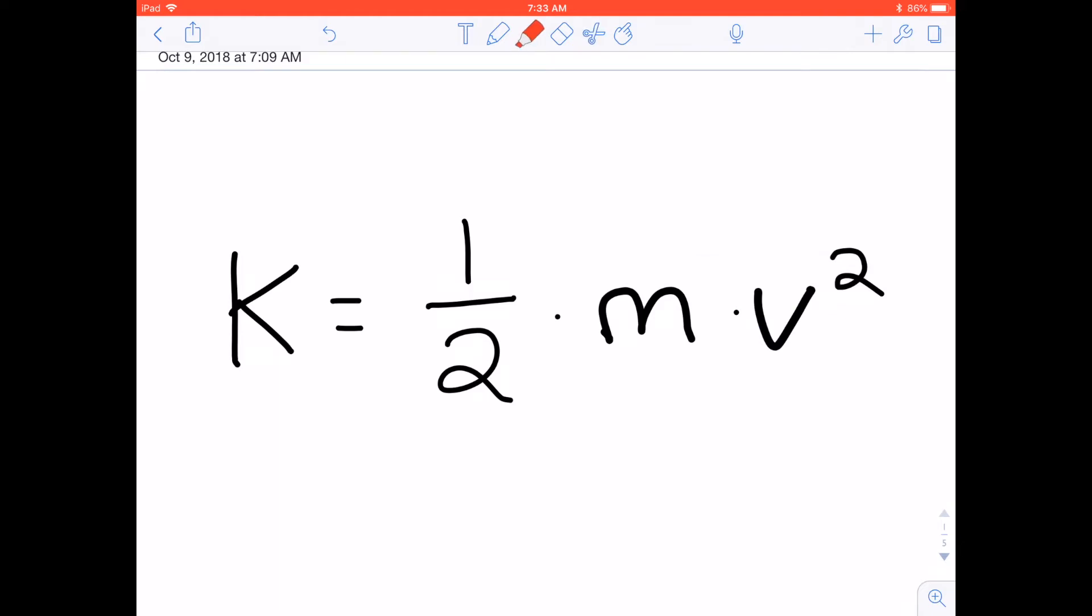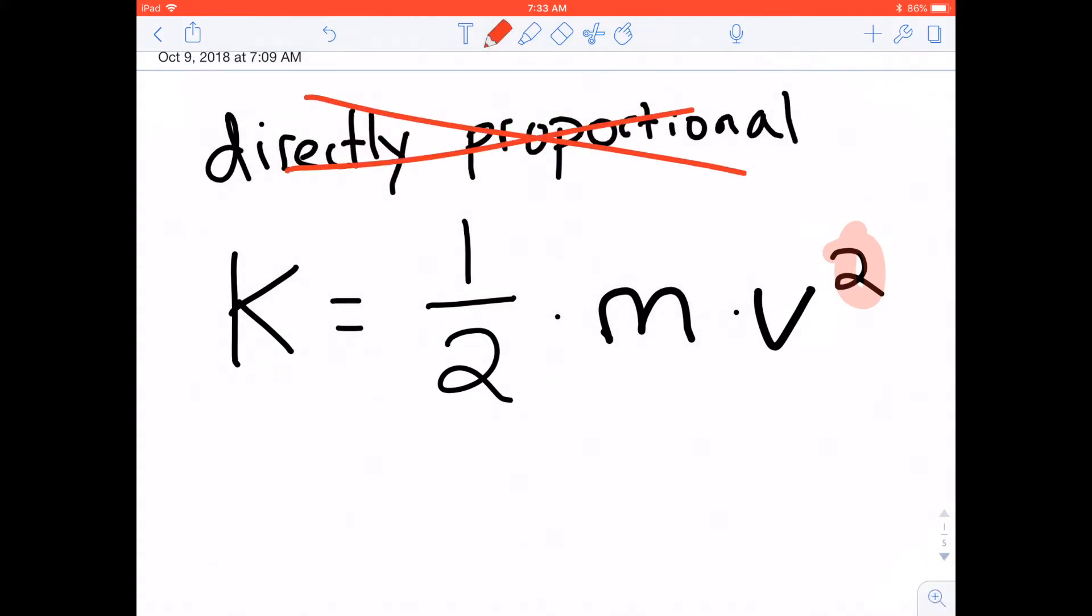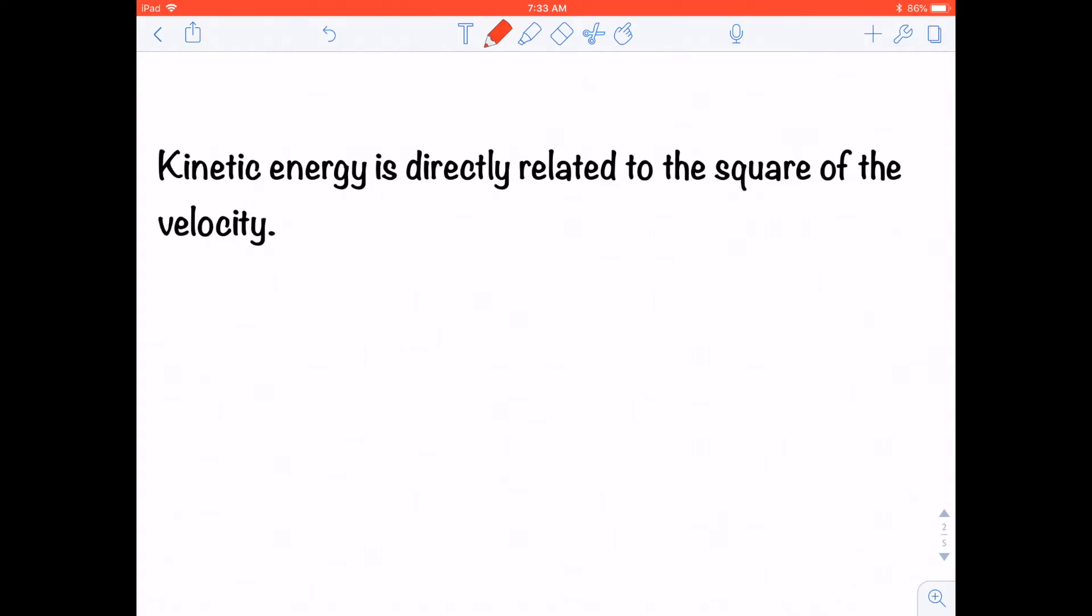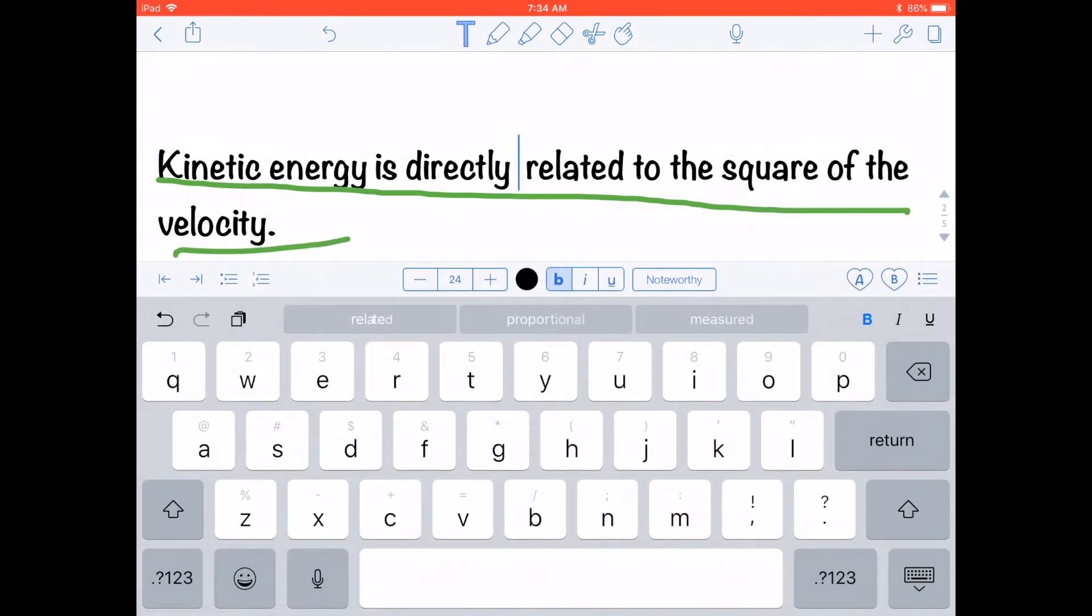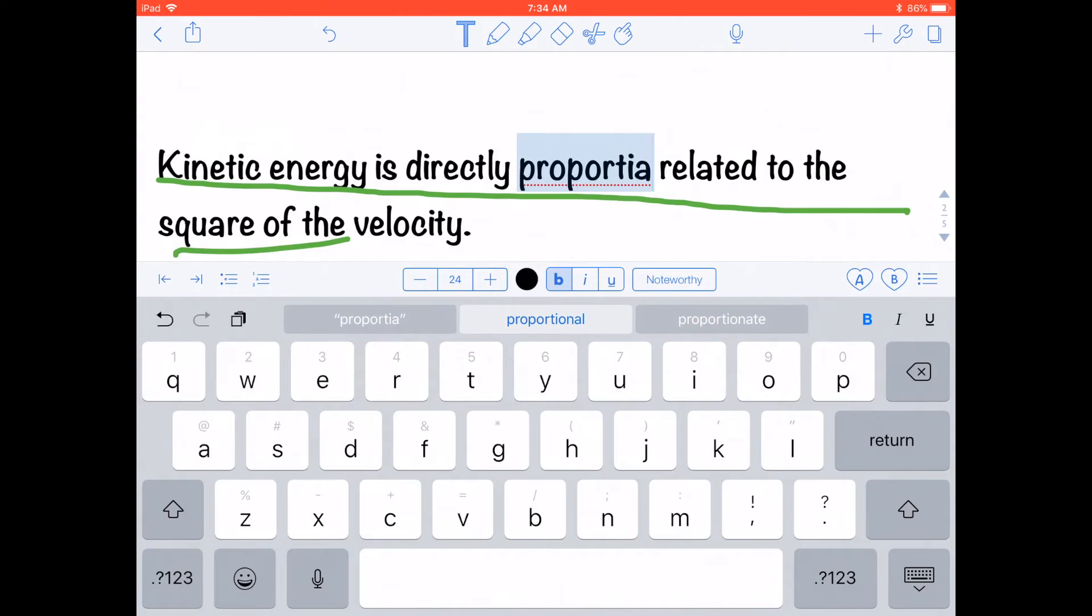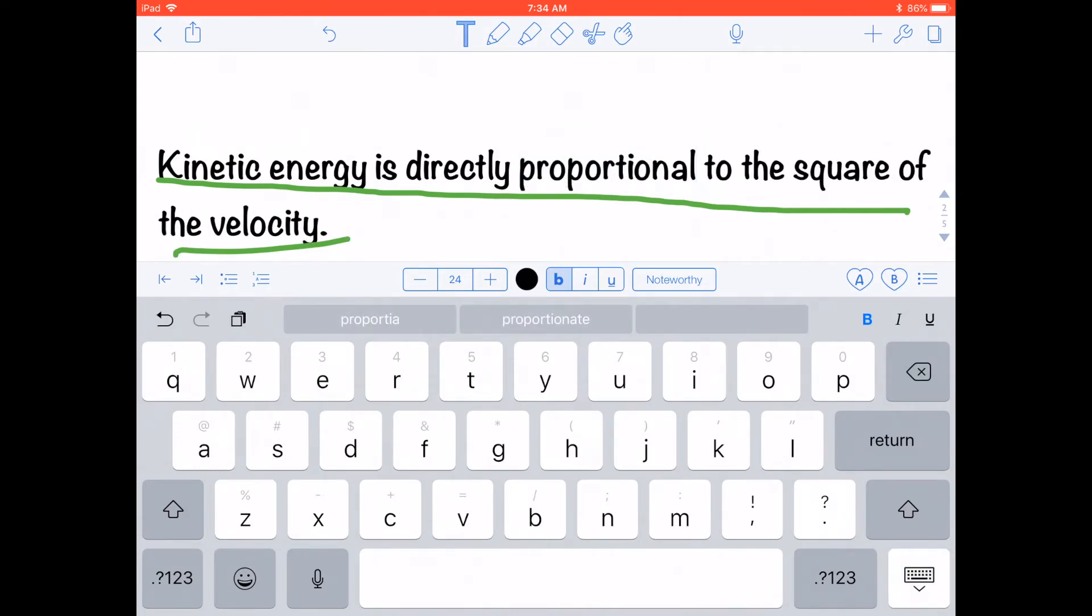However, this square makes it so we can't just call this a standard directly proportional relationship. It is not a directly proportional relationship. It's something a little bit more special. And we would say it like this. Kinetic energy is directly proportional to the square of the velocity.